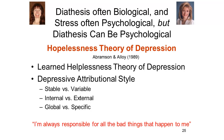Seligman proposed that learned helplessness might be a cause of depression — that people became depressed precisely because they were exposed to an environment that presented them with a lot of unpredictable and uncontrollable aversive events. But Abramson and Alloy noticed that not everybody who was exposed to such an environment became depressed. Some of them became angry. What made the difference, in their view, was that the people who became depressed approached the world with a particular kind of attributional style which was depressogenic.